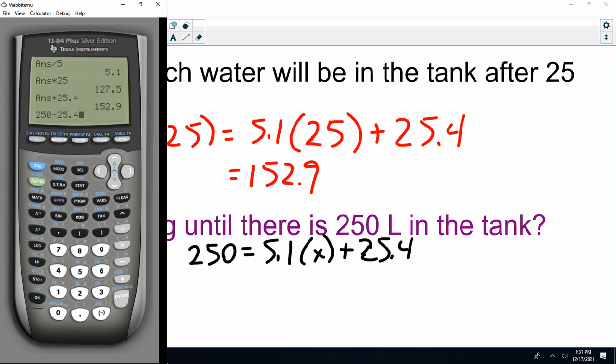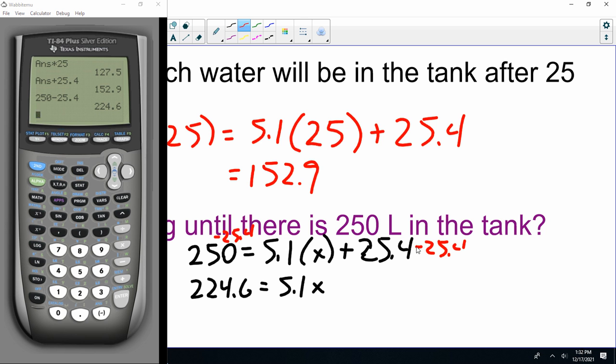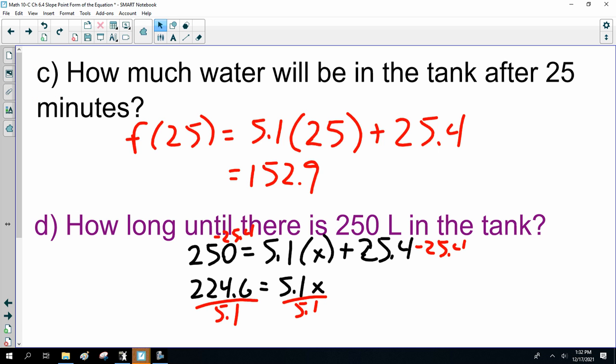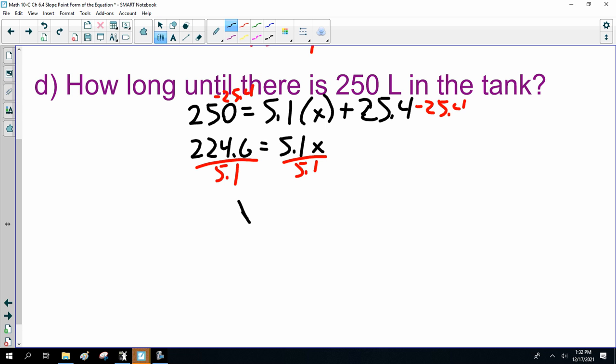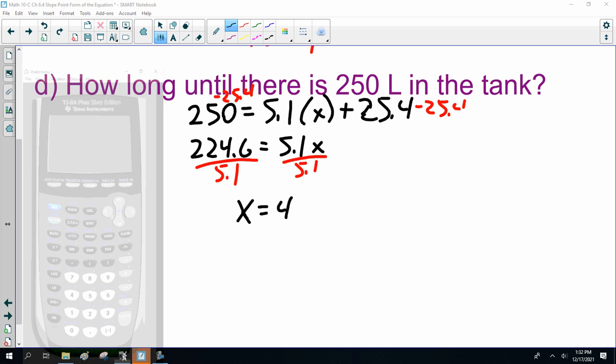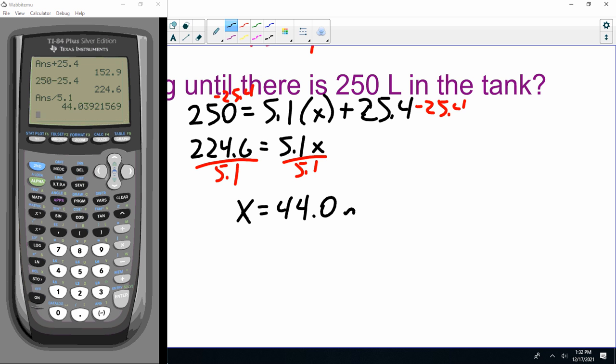So, 250 minus 25.4, that's 224.6 is 5.1x. Divide both sides by 5.1. 44.0 minutes. 44 minutes.